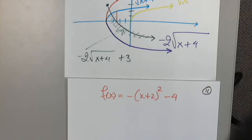A student asks: max or min? Max, because we reflected. For the final function — x squared, to the left two, reflect, down four — the vertex is negative two, comma negative four.